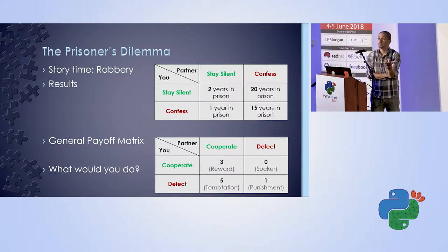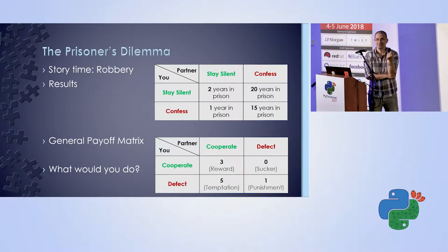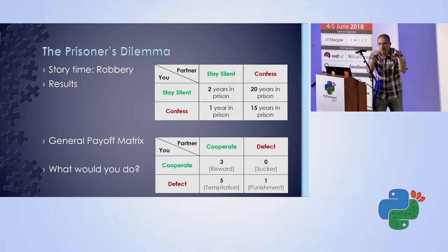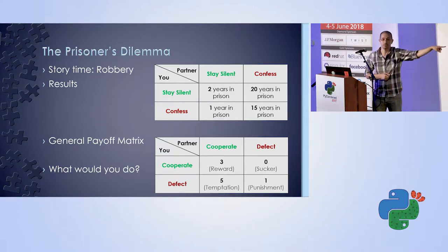If your partner cooperates, the best thing for you is to defect — you get 5 points instead of 3, or one year instead of two in prison. If your partner defects, the best thing is still to defect — you get 1 point instead of 0, or 15 instead of 20 years. Your partner is in the exact same situation, so you both end up defecting and getting the punishment payoff — the worst collective outcome.